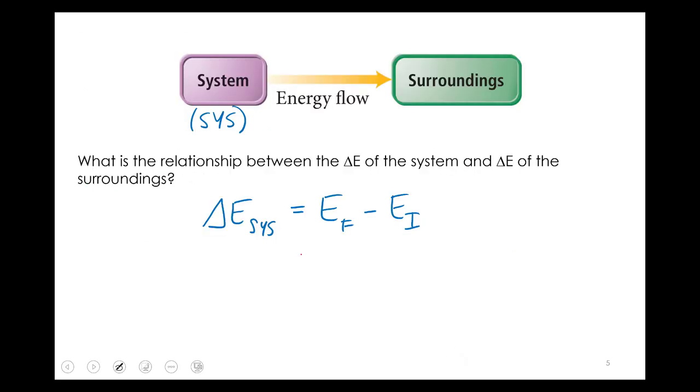So our delta E will be 25 joules minus 50 joules. And 25 minus 50 is negative 25, carry the 2, yeah, that's what I got too. Negative 25 joules.